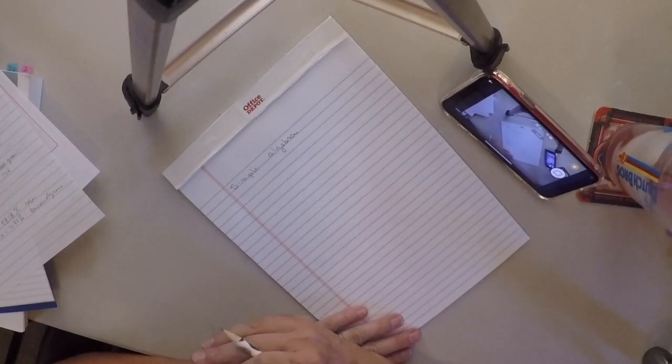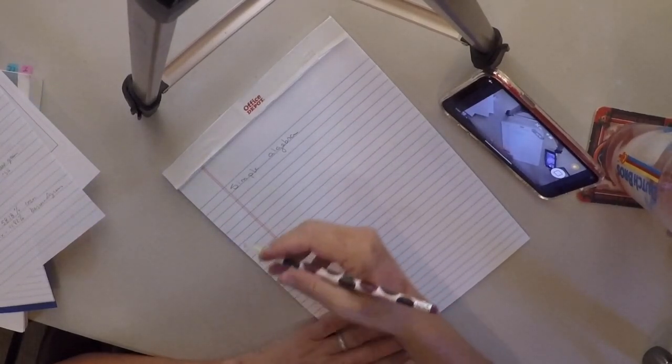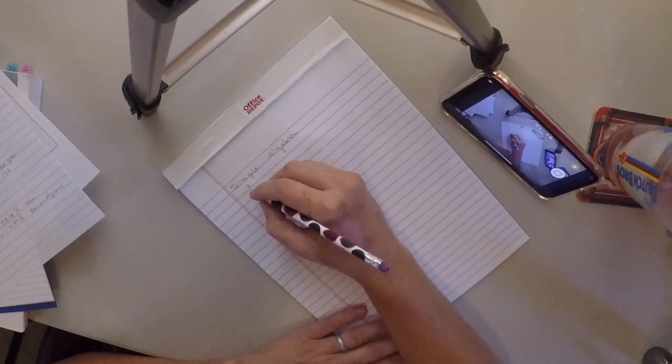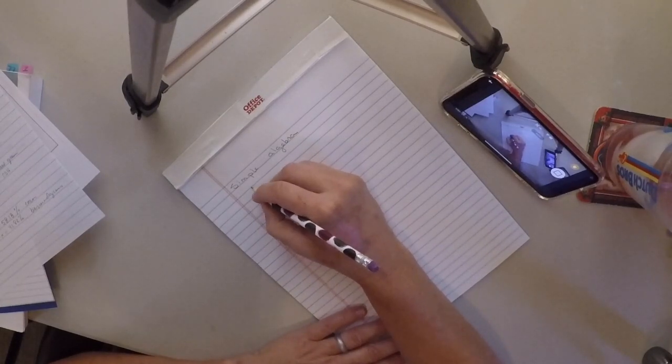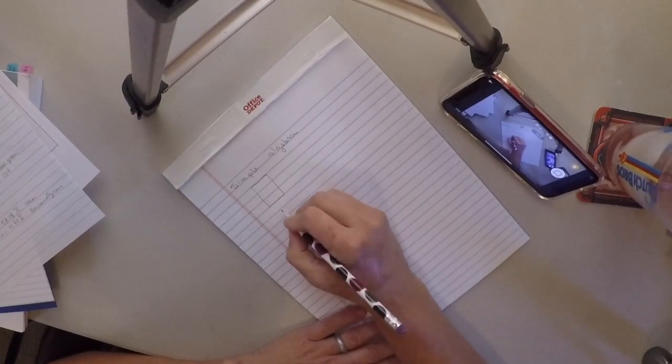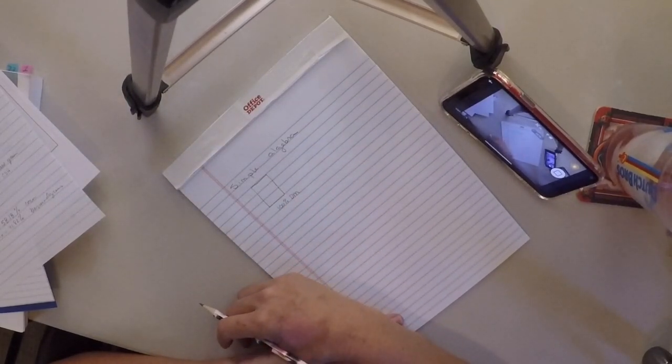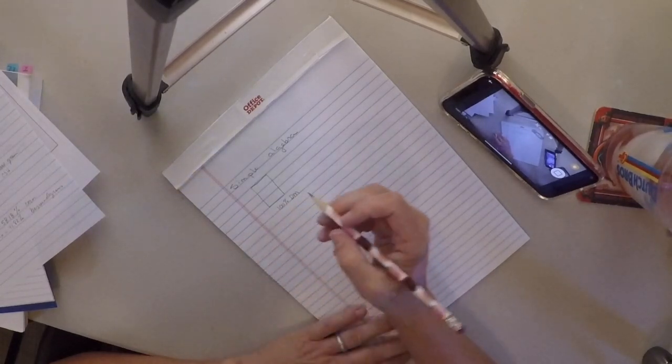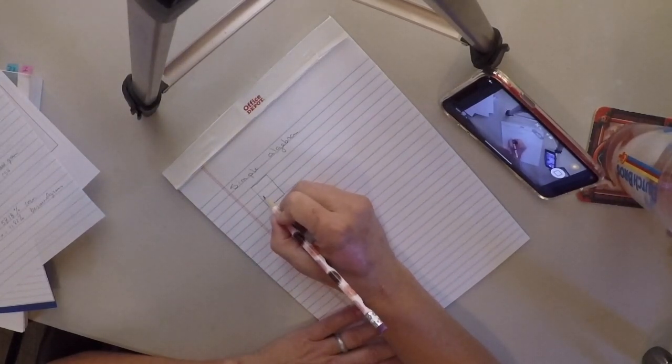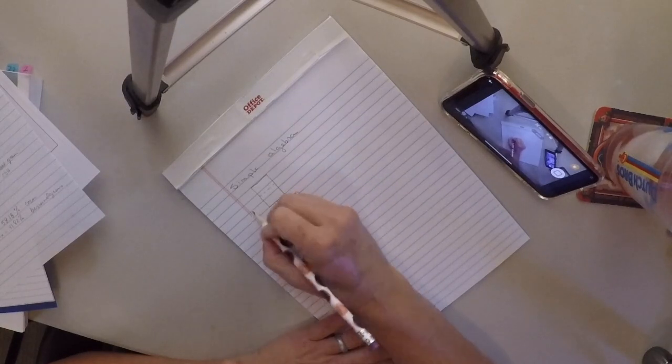And so when we are talking about balancing rations using algebra we're going to have an example of where we're trying to build a complete ration that's 100% usually dry matter because we almost always balance on a dry matter basis, and we know that in that 100% dry matter we're going to have two ingredients.